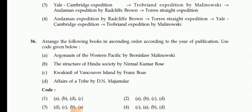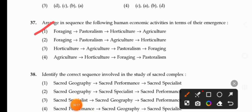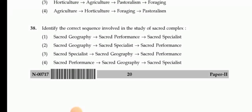Next question: Arrange in sequence the following human economic activities in terms of their emergence — foraging, pastoralism, horticulture, agriculture. The correct sequence is option 1: foraging, pastoralism, horticulture, agriculture.